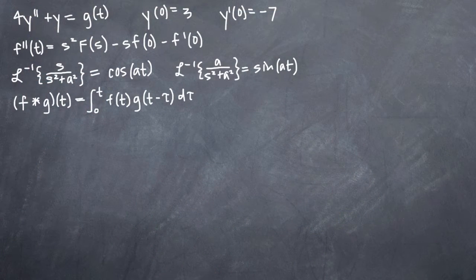In this particular problem, we've been given the second order non-homogeneous differential equation 4y'' plus y equals the function g. We've also been given the initial conditions y(0) equals 3 and y'(0) equals negative 7. Our first step is going to be to take the Laplace transform of our second order non-homogeneous differential equation.